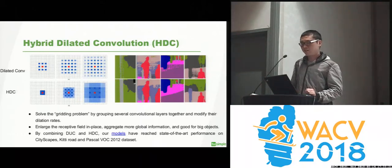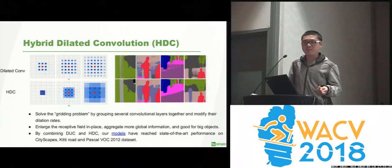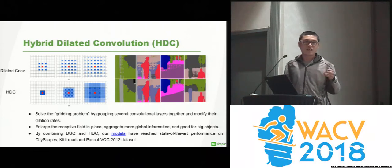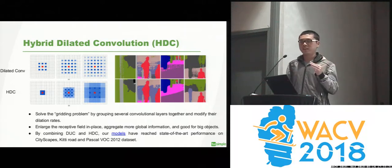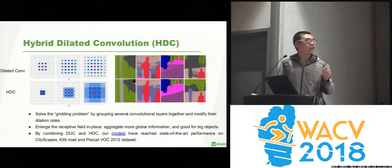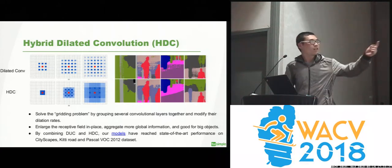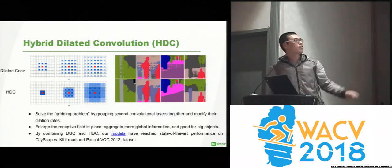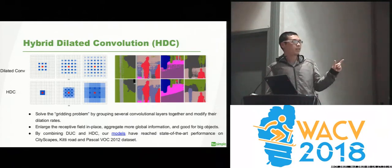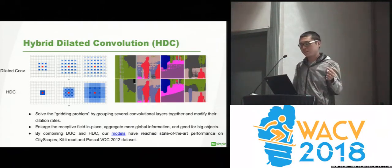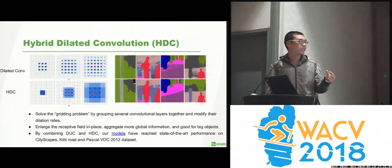The other technique I want to introduce is hybrid dilated convolution, or HDC. The motivation is simple: normal dilated convolution with the same dilation rate for all layers may suffer from a gridding effect. The center pixel can only receive information from those blue pixels but not from the white pixels, causing inconsistency in the output and loss of information.